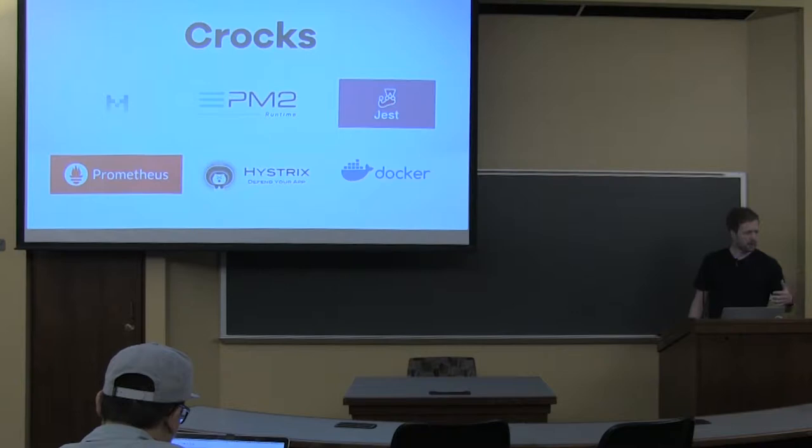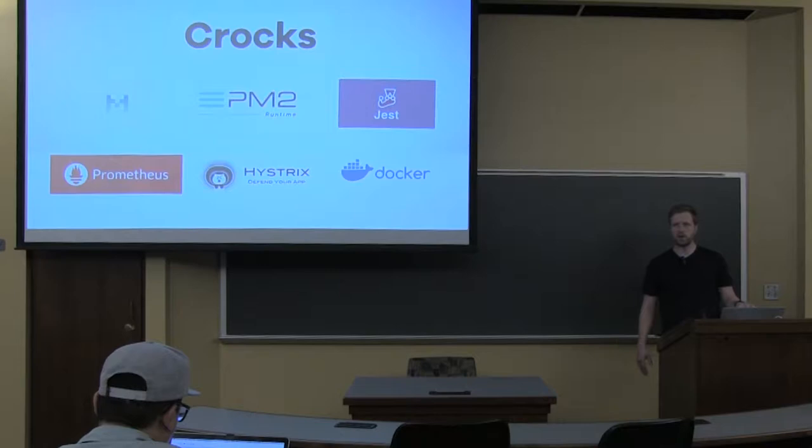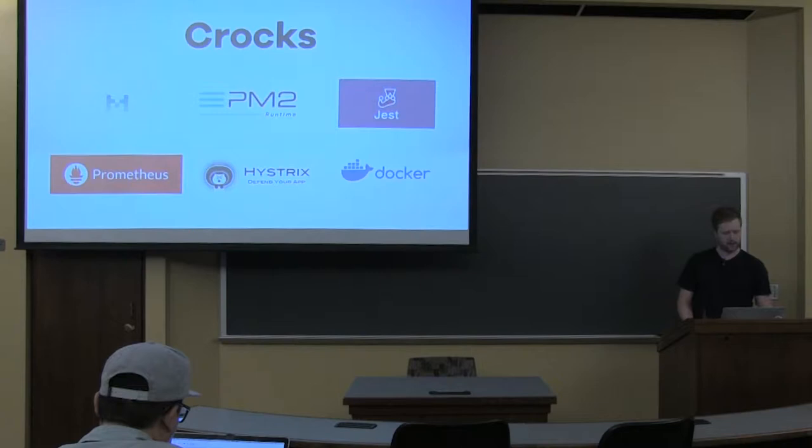Things we're going to be looking at include Crocks, which is a functional programming library by Ian Hofmann-Hicks — it's pretty good, I've been using it quite a bit recently and it's really nice. Other things we're looking at are Micro, PM2. I've got Jest up here because there are tests in the repo that you can download — I don't think we're going to go into them in too much detail but if you want to, shout out and we can. The bottom layer is our platform stuff: Prometheus, Hystrix, Docker, and there's also a bit of Toxiproxy thrown in.